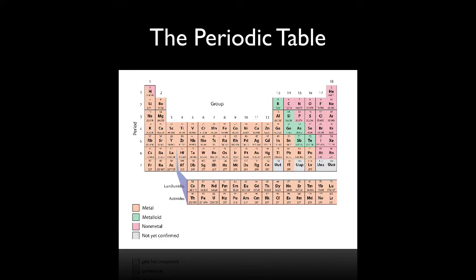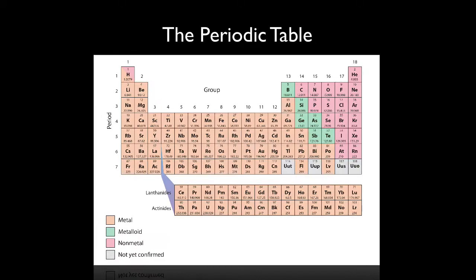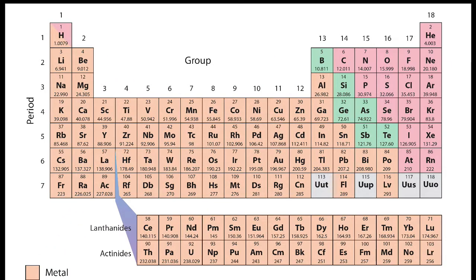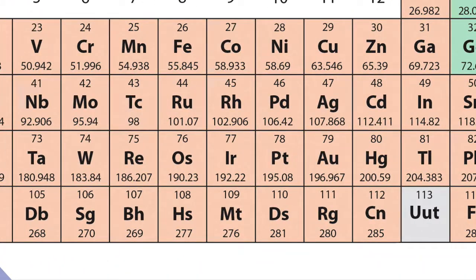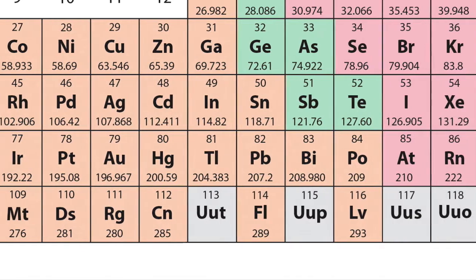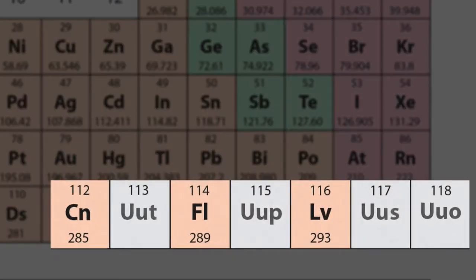The periodic table is a listing of all the known elements. How many known elements are there? Just over a hundred. You'll hear in the news periodically of the discovery of a new element. That's likely one of these heavier elements located around here in the periodic table.